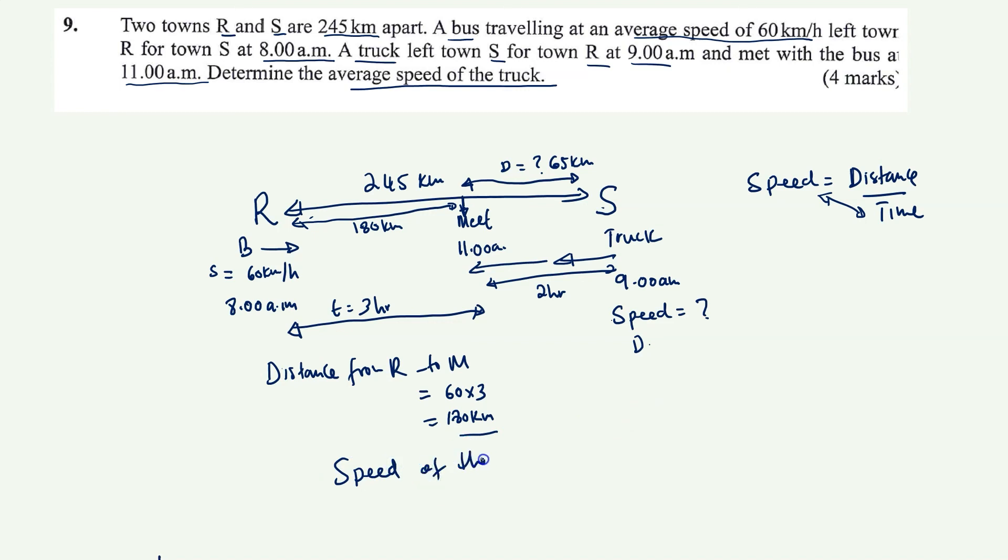Speed of the truck is going to be equal to distance, which is 65 over the time it has traveled from S to the meeting point, which is two hours. And this will give you 32.5 kilometers per hour. Okay, so that is the average speed of the truck.